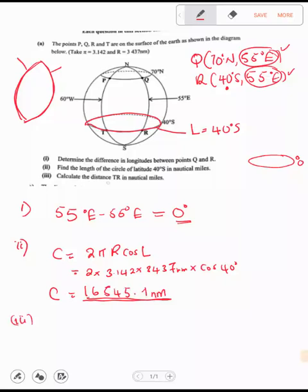It says, calculate the distance TR. This is the distance they're looking at. They're telling us to find. So we still have to use 40 because the TR, they're on the small circles. So we're going to say the distance is equal to theta divided by 360, multiply by 2πR cos L. It's clear, right?